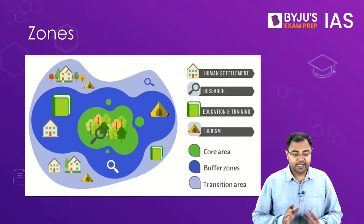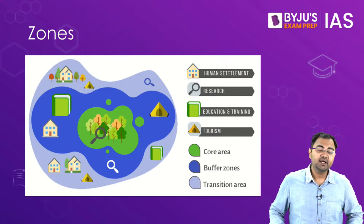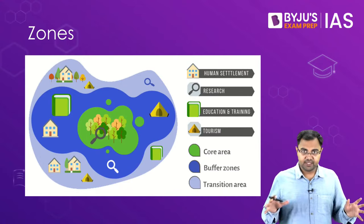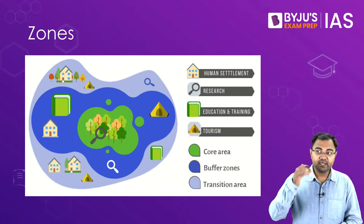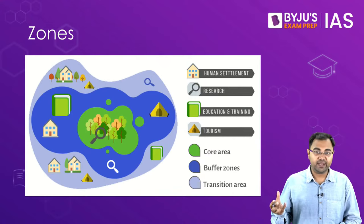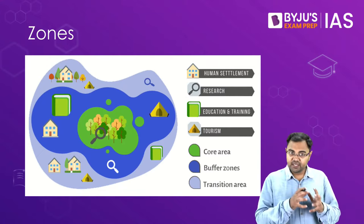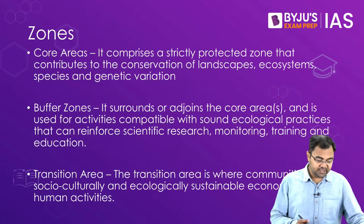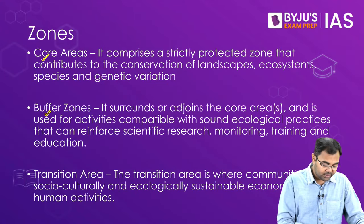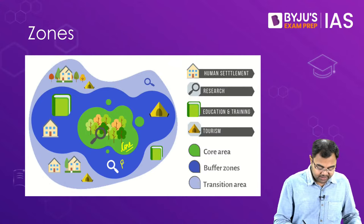Let's understand how areas within a Biosphere Reserve are demarcated. Biosphere Reserves are very large areas — generally the largest among all protected areas. Within any Biosphere Reserve, there are three categories or zones: the Core Zone, the Buffer Zone, and the Transition Zone. The innermost part is the Core Zone, surrounding it is the Buffer Zone, and the outermost part is the Transition Zone.